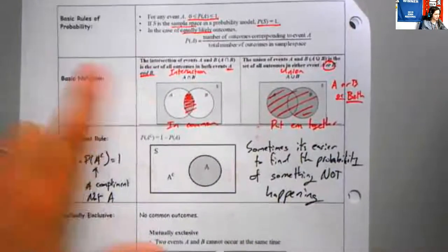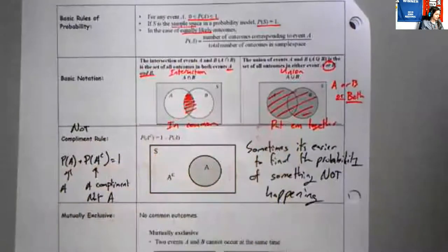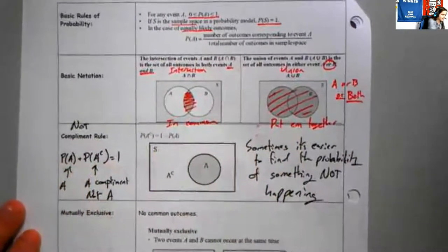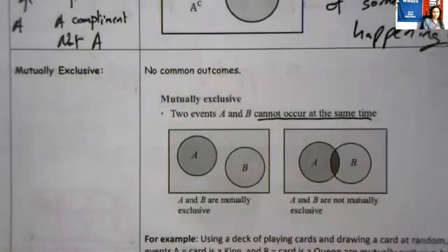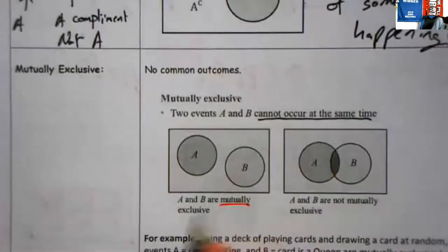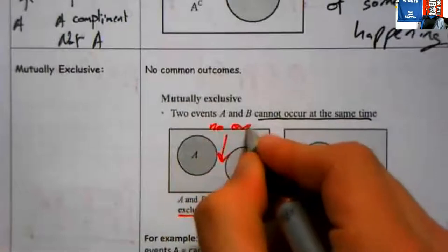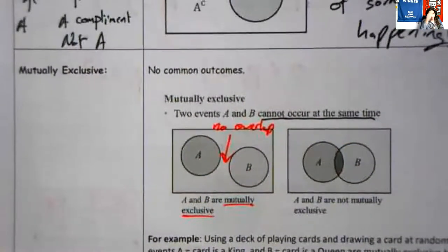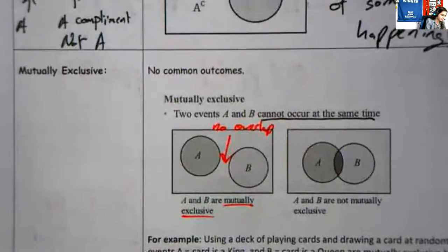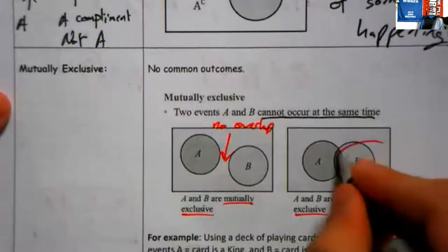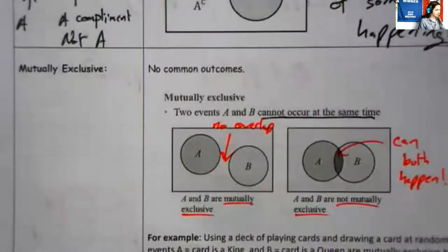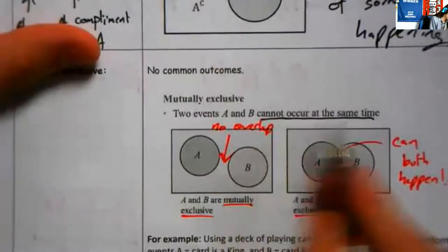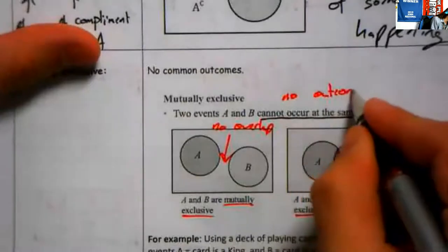We can represent these things with Venn diagrams — we can talk about what they have in common, putting them together, or the complement (the 'not' part). The other thing we can talk about is mutually exclusive. What does mutually exclusive mean? They cannot occur at the same time. What does that look like visually? If they're mutually exclusive, they have no overlap. If they're not mutually exclusive, they can both happen — there are outcomes where they both happen. Mutual exclusivity means no outcomes in common.